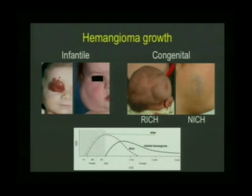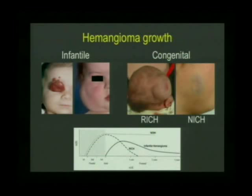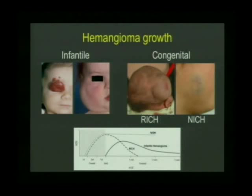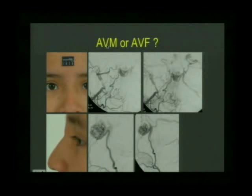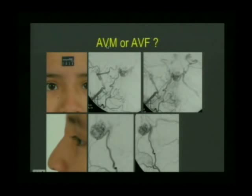NICH and RICH are diagnosed clinically. A very typical appearance includes a blue halo, a pale periphery, and some telangiectasias. The diagnosis of these can be made clinically. Regarding AVM versus AVF: in AVF there is no nidus, which distinguishes it from AVM.